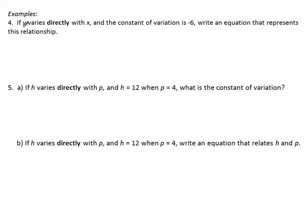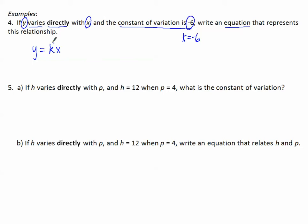Number 4: if y varies directly with x, we write y equals k times x. The constant of variation is negative 6, so k equals negative 6. Write an equation that represents this relationship — we just need to know k, and they gave it to us. So y equals negative 6x.